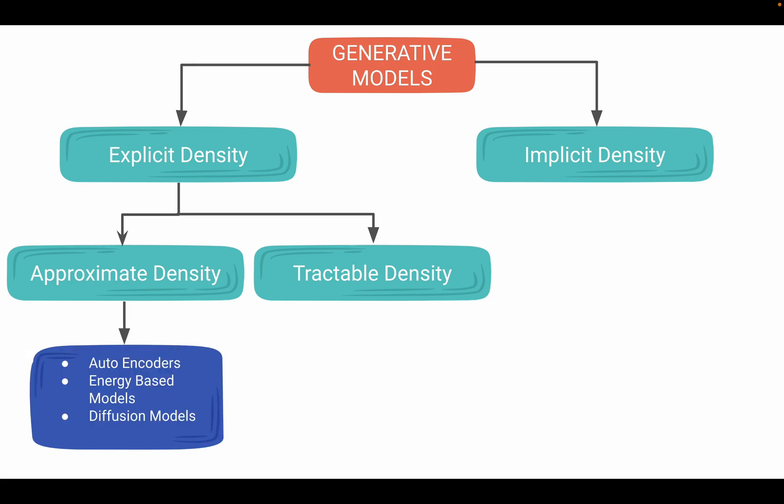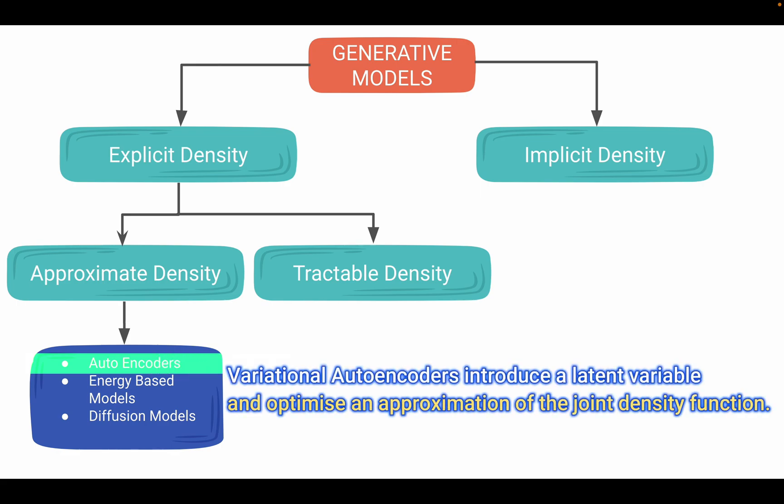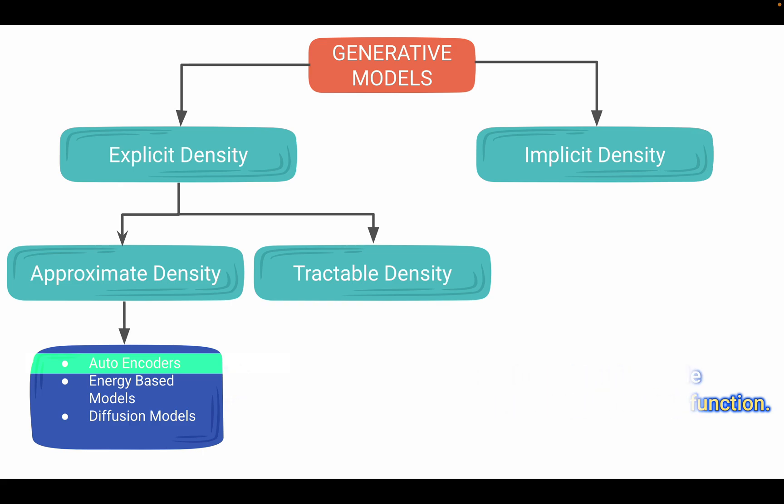Let me talk briefly about all three. Autoencoders mainly include variational autoencoders. They introduce a latent variable or hidden variable in simpler terms and optimize an approximation of the joint density function.